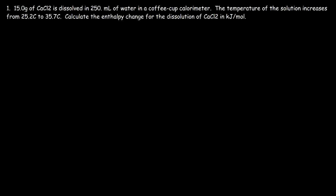In this video we're going to talk about how to solve the coffee cup calorimeter problem. Consider this problem: 15 grams of calcium chloride is dissolved in 250 milliliters of water in a coffee cup calorimeter. The temperature increases from 25.2°C to 35.7°C and our goal is to calculate the enthalpy change in kilojoules per mole. Let's draw a picture of the coffee cup calorimeter.